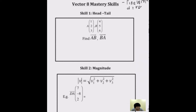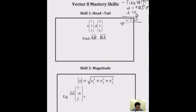So if a vector goes right, it can be positive 10. If it goes left, it can be negative 10. So positive and negative mean different directions.